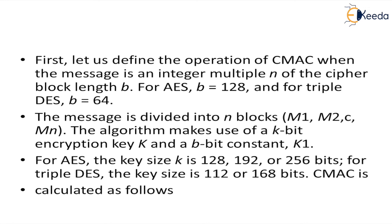First, let us define the operation of CMAC when the message is an integer multiple of the cipher block length b. For AES, b is 128 and for triple DES, b is 64. The message is divided into n blocks M1, M2 up to Mn. The algorithm makes use of the k-bit encryption key K and b-bit constant k1. For AES, the key size is 128, 192 and 256 bits. For triple DES, the key size is 112 or 168 bits.